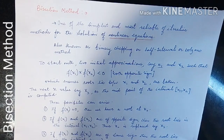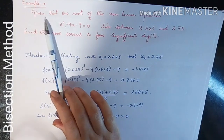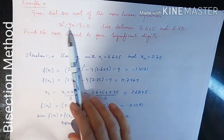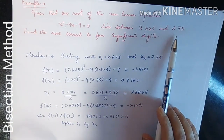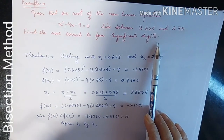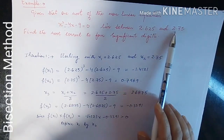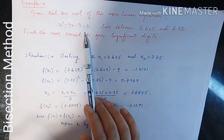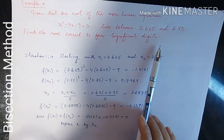Now we will take an example to understand how to compute the root of a nonlinear equation using the bisection method. We are given that one root of x³ - 4x - 9 = 0 lies between 2.625 and 2.75. We need to find the root correct to four significant digits.